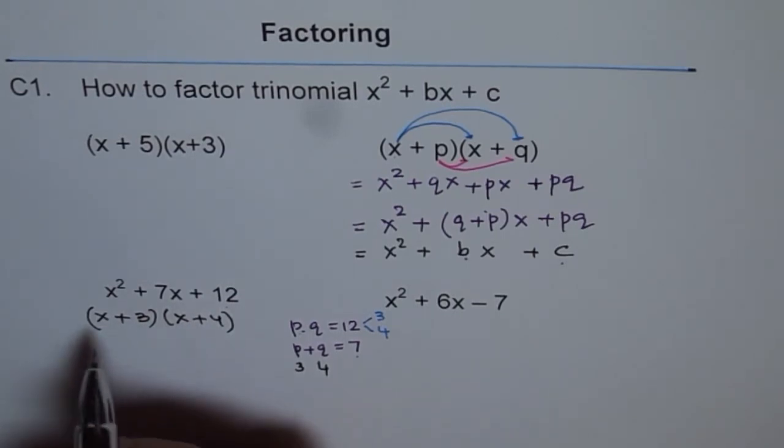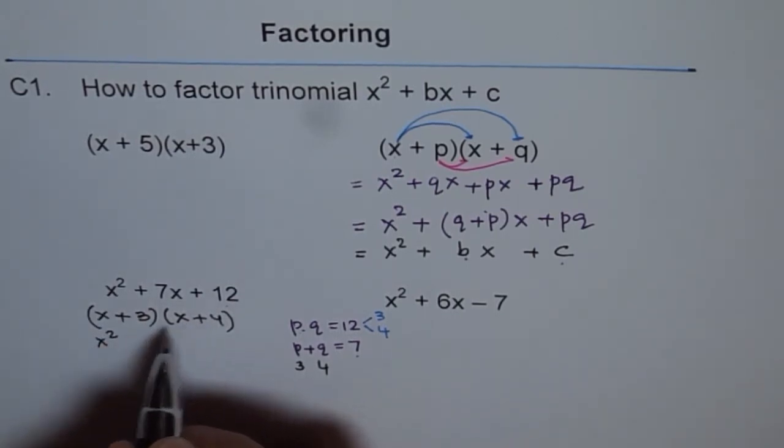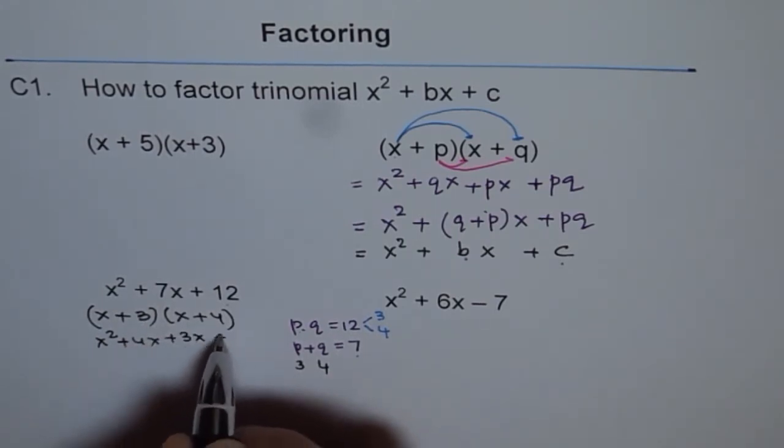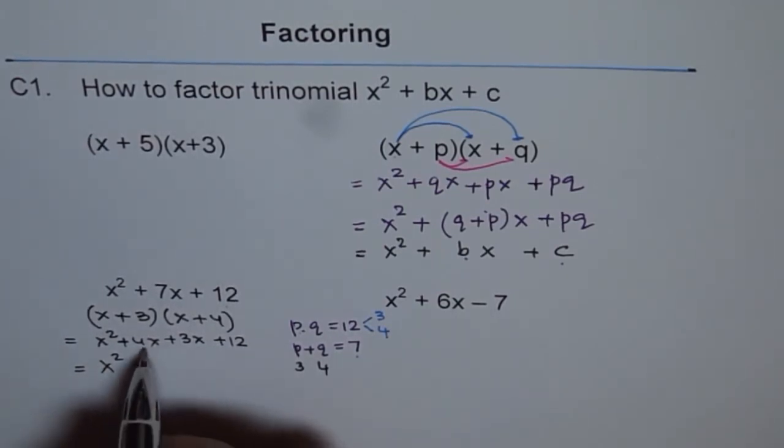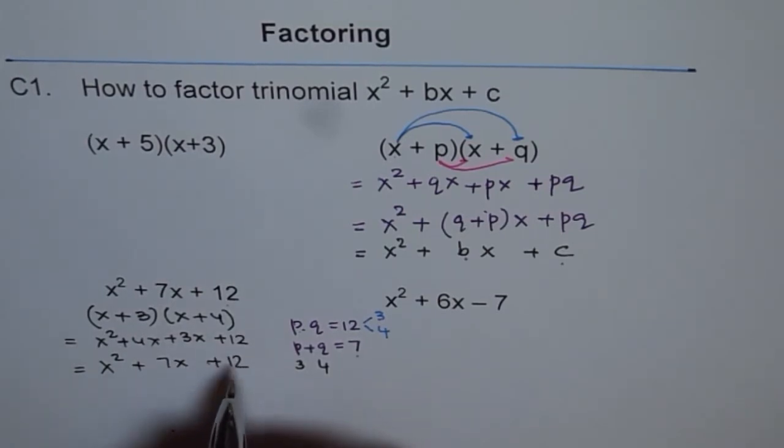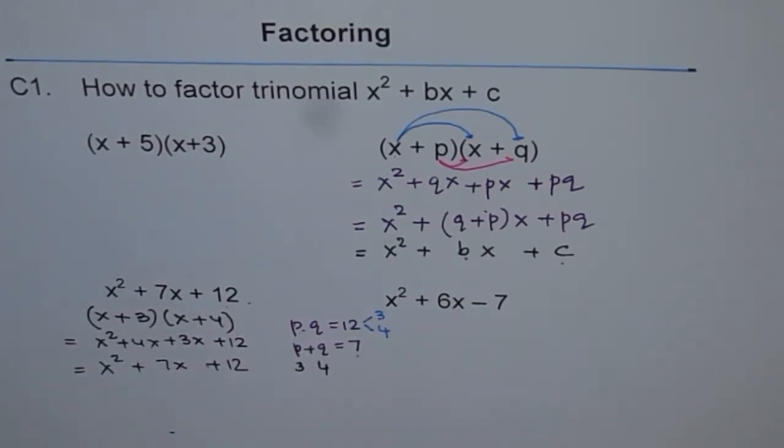We get x squared here plus 4x. And when we multiply by 3, we get 3x plus 12. And that gives us x squared plus 4 plus 3 is 7x plus 12. Yes, we do get the same thing. So that gives us a very important strategy.